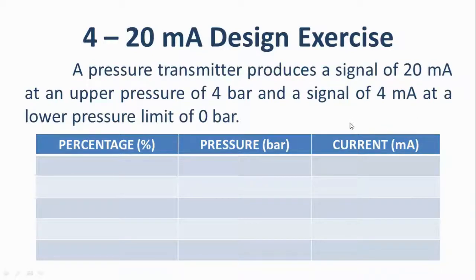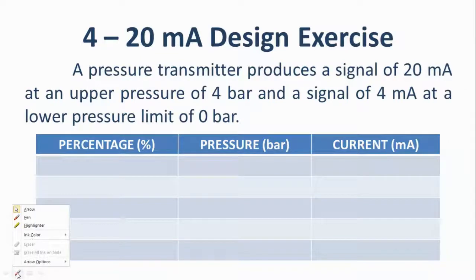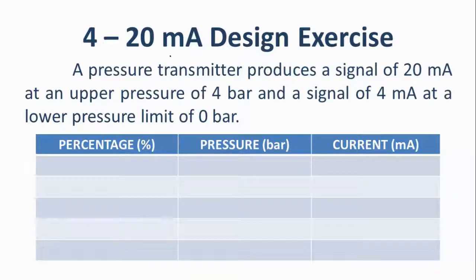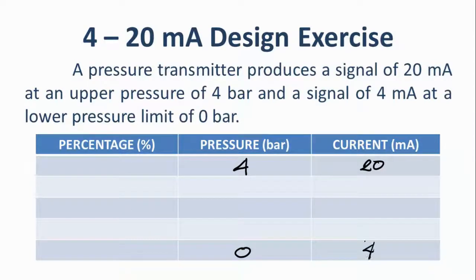From the problem statement, the pressure transmitter produces a signal of 20 mA at the upper pressure limit, so we write 20 mA at 4 bar. At the lower pressure limit of 0 bar, the output is 4 mA. So we enter 0 bar with 4 mA as our lower boundary values.